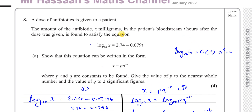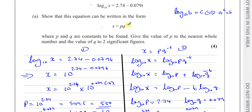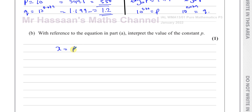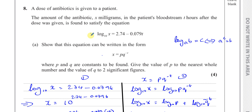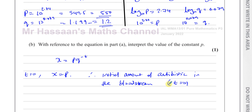Part b says: with reference to the equation in part a, interpret the value of the constant p. Since x is the amount of antibiotic in the bloodstream t hours after the dose was given, when t equals zero, x equals p times q to the power of zero, which equals p. So p is the initial amount of antibiotic in the bloodstream at t equals zero — in other words, the amount at the start.